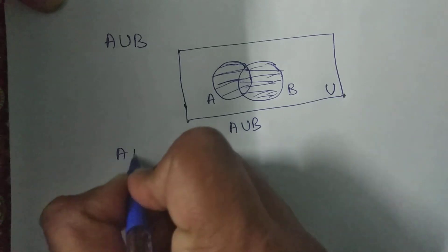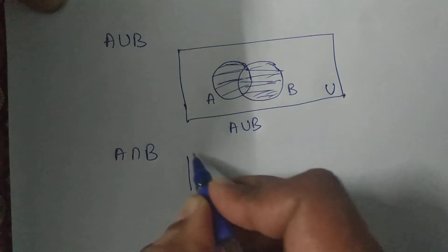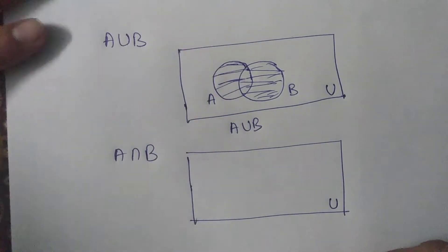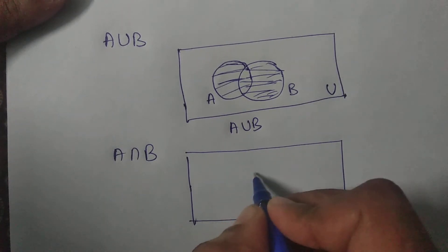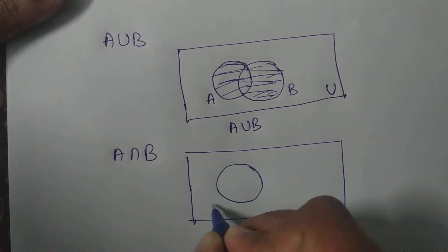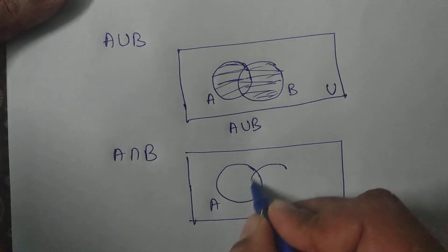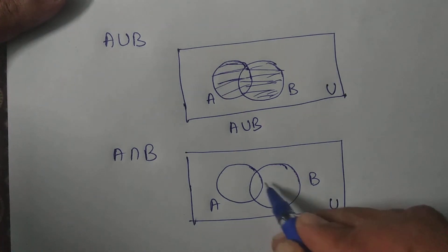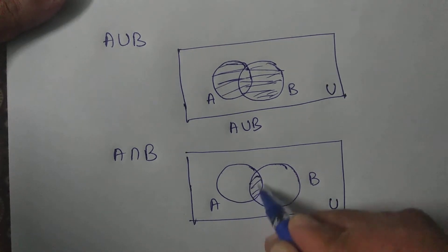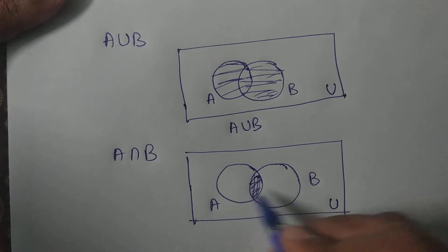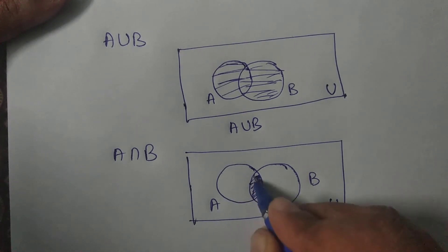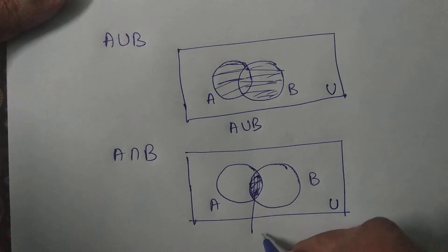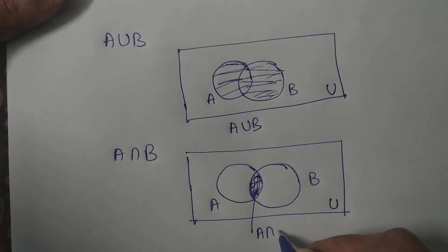Now suppose I need to represent A intersection B. So again I will draw a rectangle — this area represents the universal set. This circular area represents set A and this circular area represents set B. Now this area is common to both sets A and B, so this shaded common area represents A intersection B.